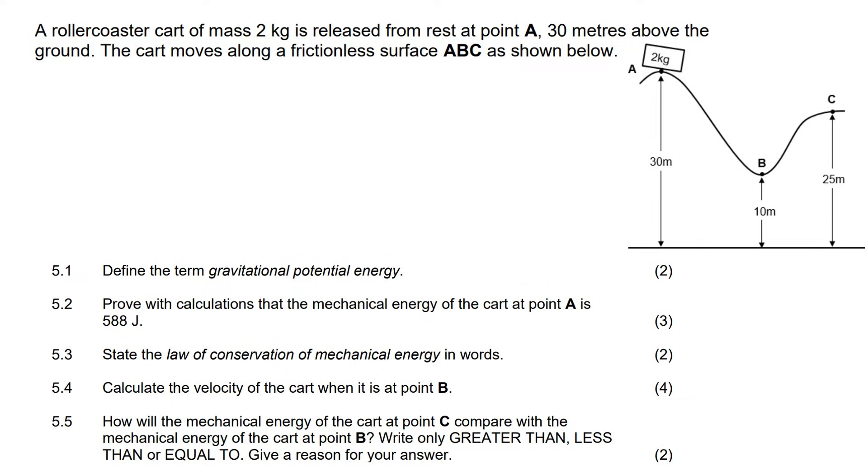A rollercoaster of mass 2 kilograms is released from point A, which is 30 meters above the ground. We can see over here that they've said 30 meters, and the cart moves along a frictionless surface. Only in grade 12 will we actually start adding friction for these kinds of questions. A, B, C, as shown below.